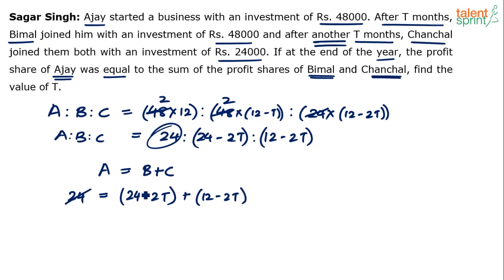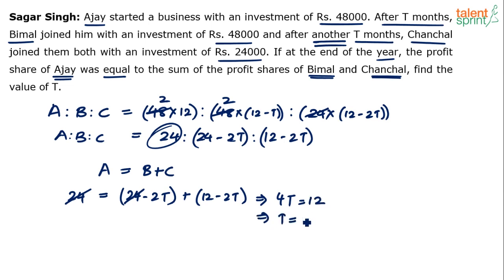Simplifying: 24 cancels on both sides, leaving 4T = 12, so T = 3.